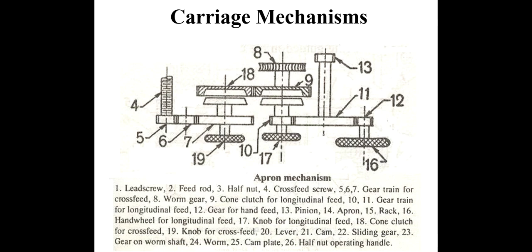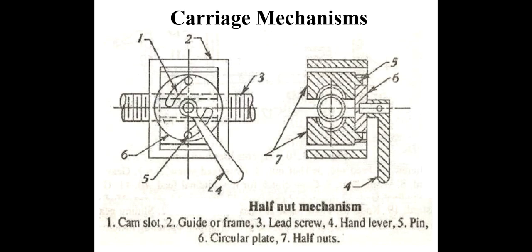In the carriage, there are two mechanisms. First is the apron mechanism, and second is the half nut mechanism. The apron mechanism is used for providing cross as well as longitudinal motion automatically. The half nut mechanism is used for automatic feeding. These are the main parts of the lathe machine.